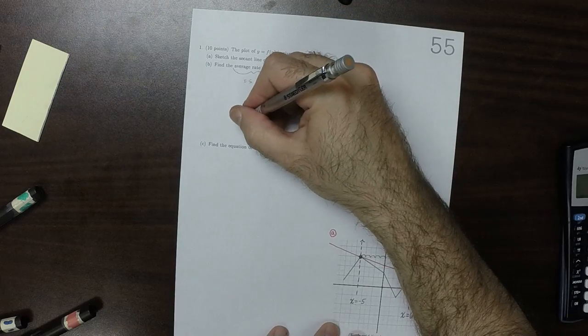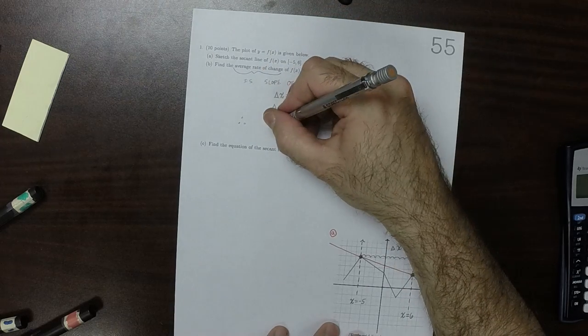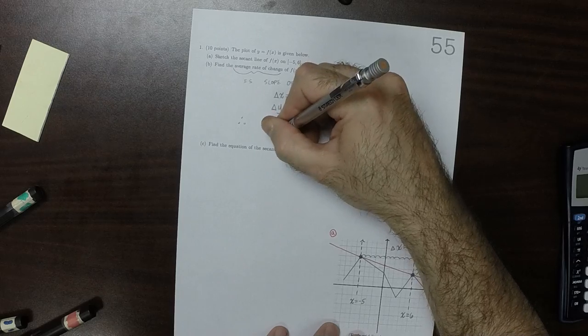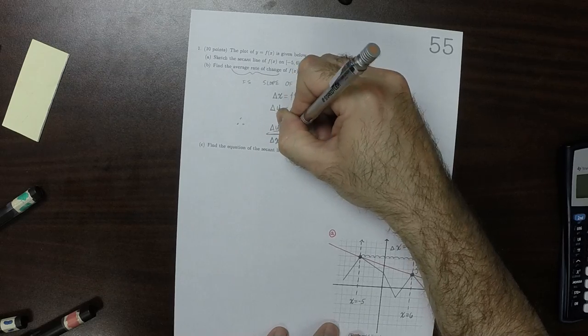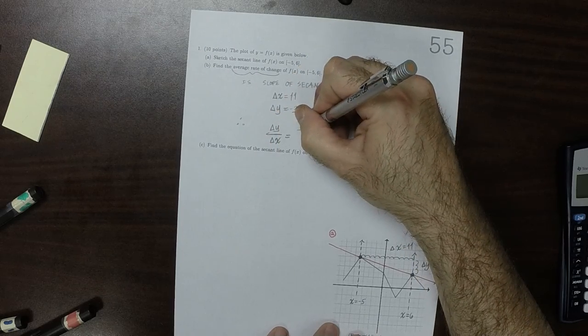And therefore, the answer that we're looking for, the change in Y divided by the change in X, is negative 3 over 11.